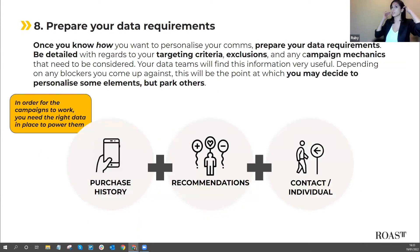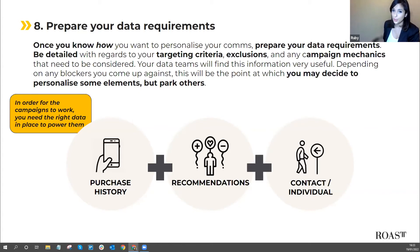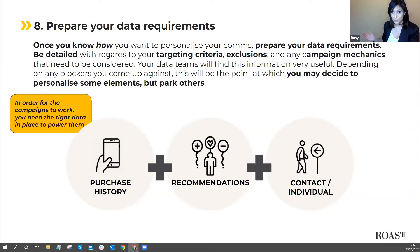Once you've done the wireframing, it's time to consider your data requirements. Once you know how you want to personalise your communications, identify all the data sets you need in place to power your campaigns — be as detailed as possible, as your data teams will find this very useful. In the campaign example, purchase history, recommendations, and contact data are required. You may encounter obstacles such as the technology not handling the complex data structure, or data teams not having bandwidth — if so, park what you need to and build your MVP campaigns with current capabilities.